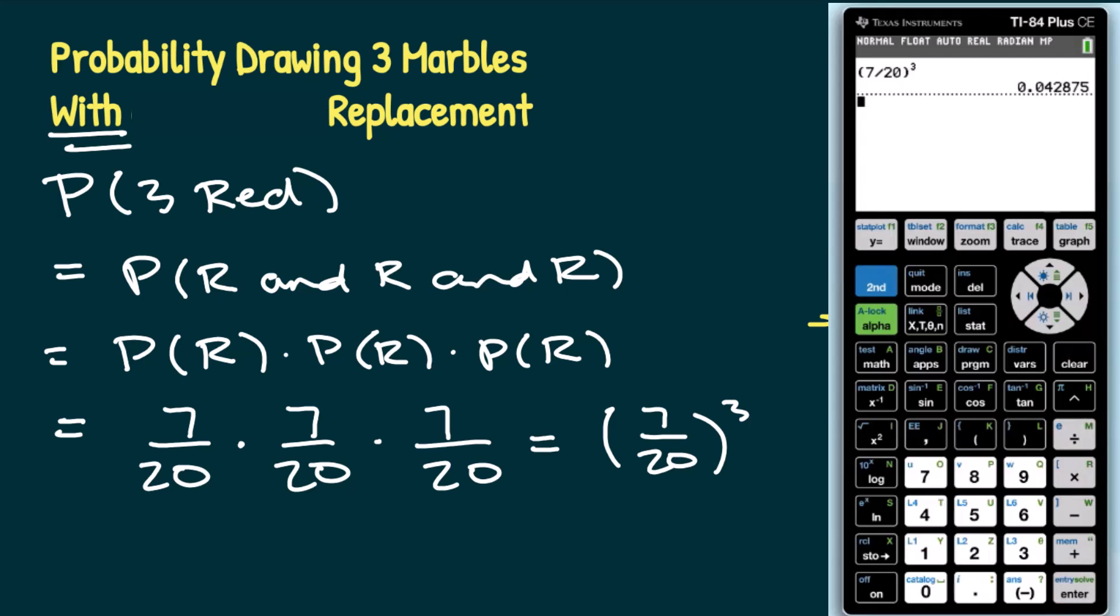I end up with 0.042875. So we can say that this is approximately 0.0429, or if I move that decimal two places, we can say 4.3%.